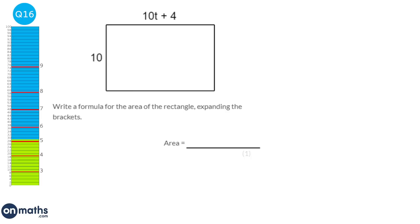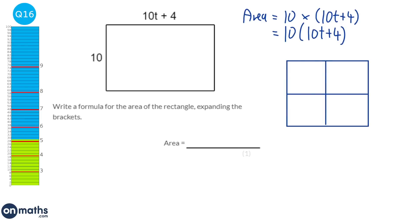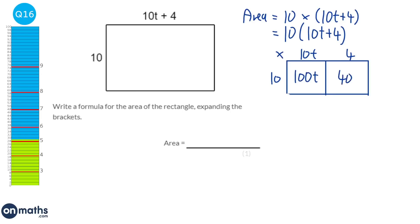To find the area of a rectangle we do length times width. Here the area is 10 times the whole of 10t plus 4, written as 10 brackets 10t plus 4. Expanding using the grid method: 10 times 10t is 100t, and 10 times 4 is 40. So the answer is 100t plus 40.